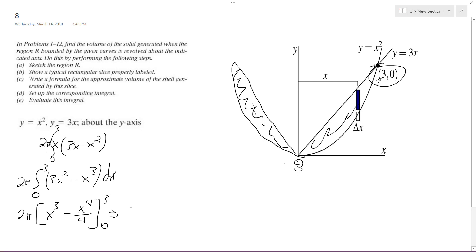So we end up with—the 0 ends up doing nothing, but we get 3 cubed minus 3 to the 4th over 4. So what we end up with is 2π times 27 minus 81 over 4.